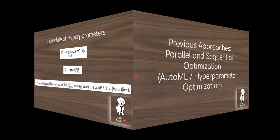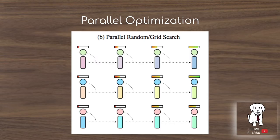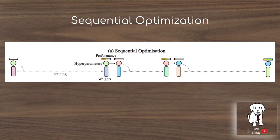Previous approaches to hyperparameter optimization generally fall into parallel and sequential optimizations. Parallel optimization — something like random or grid search — configures a search space and sends a bunch of models to train themselves to convergence or some early stopping criterion. Sequential optimization is things like Bayesian optimization, or like manually training your model and then deciding to increase the dropout rate and observing what happens. Sequential optimization generally outperforms random parallel search, but it's not optimal because you have to wait for runs to converge before doing the next round of evaluations.